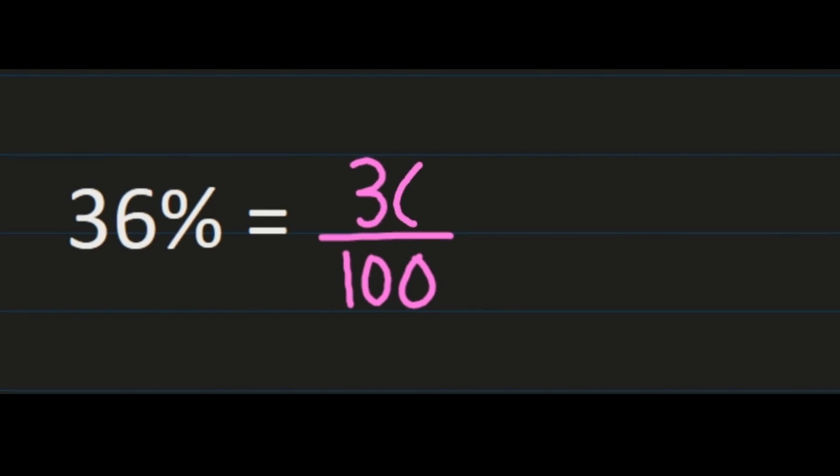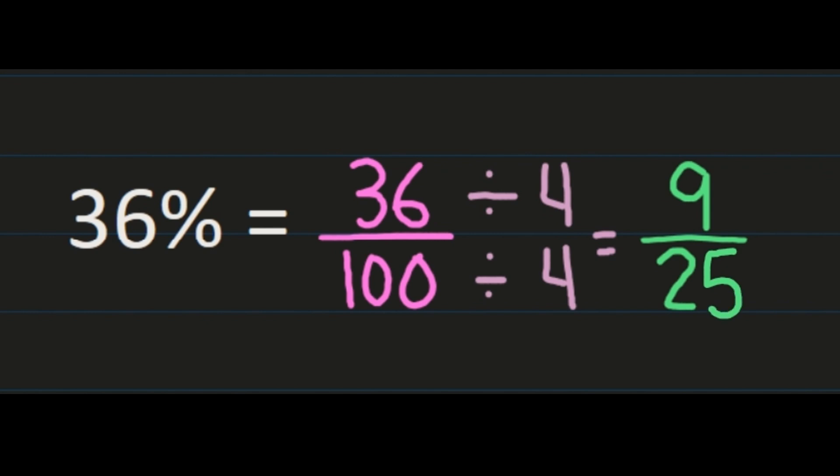But can we simplify? Well, 36 and 100 both share a common factor of 4, so I can simplify. So I'm going to need to divide my numerator and my denominator both by 4. So 36 divided by 4 is 9, and 100 divided by 4 is 25. So 36% is equal to 9 twenty-fifths.